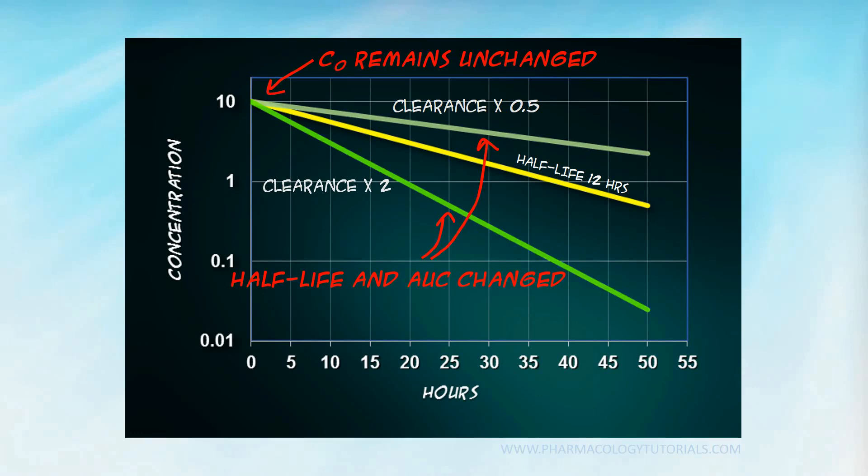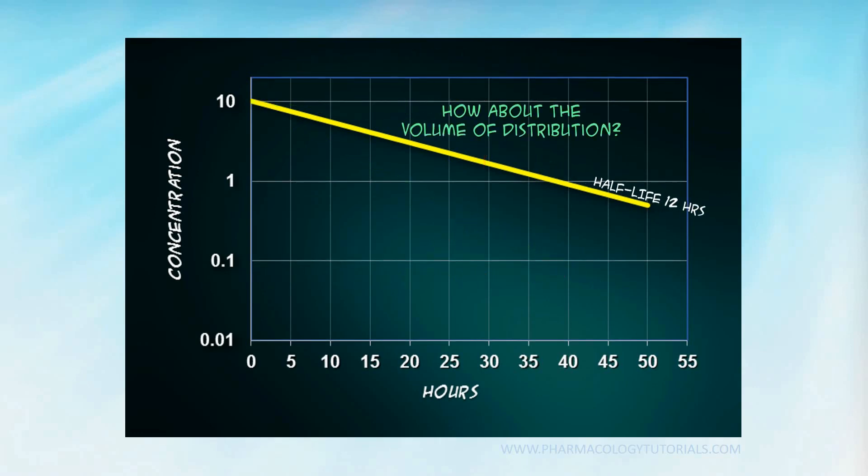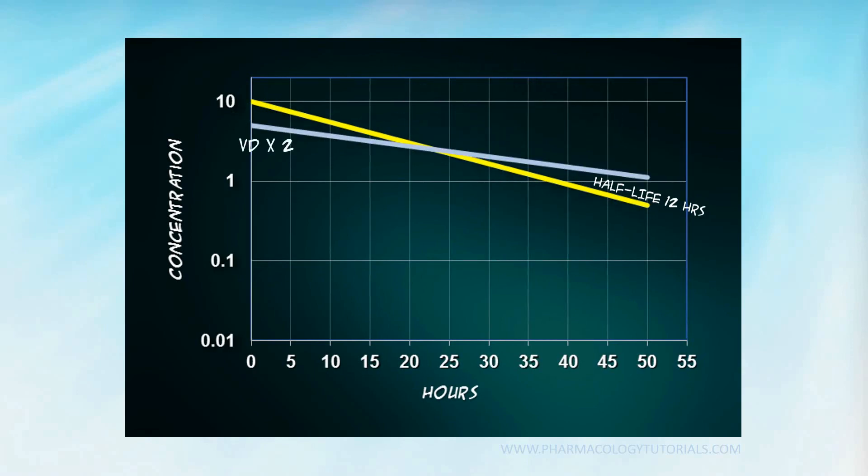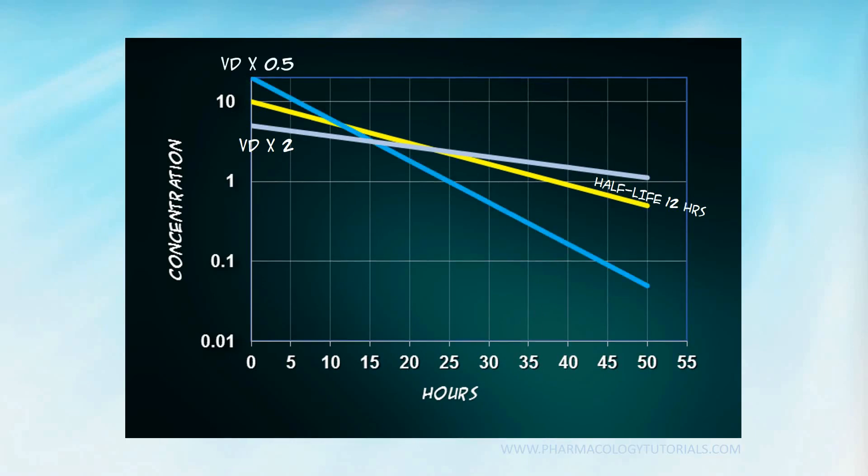Let us now consider what happens if you alter the volume of distribution. If you double the volume of distribution, the half-life lengthens. As can be predicted. Conversely, if you decrease the volume of distribution, the half-life shortens.